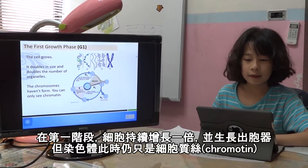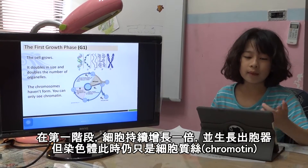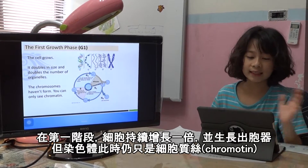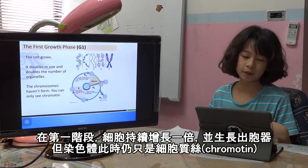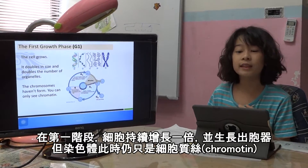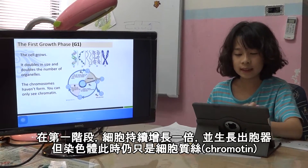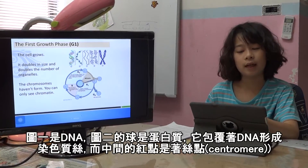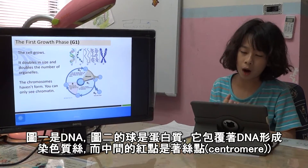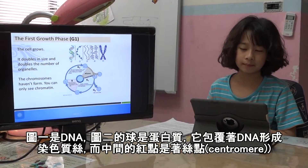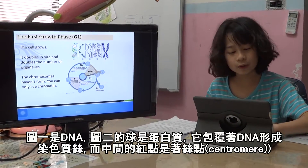In G1, you can see the cell is growing — they have a double size and a double number of organelles. The chromosomes have a form where you can only see the protein. Number one is DNA, number two — the small box — is the protein, which forms the chromosome. The red dot is the centromere.